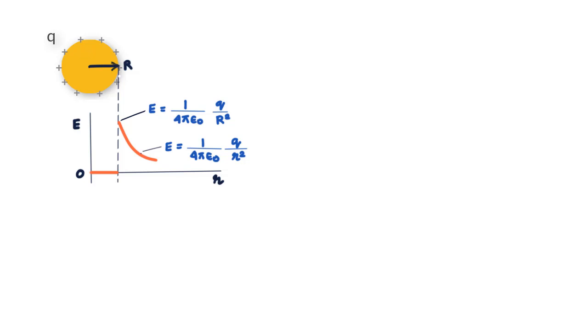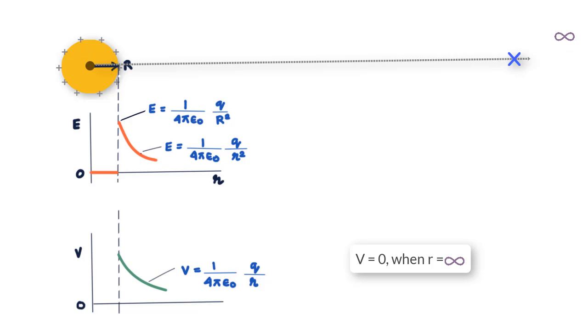So when measuring potential outside the sphere, we can assume the sphere to be like a point charge with charge Q and we can directly use the formula for potential due to charge Q that is 1 upon 4 pi epsilon Q by R and we see that the potential will be zero when R is at infinity and increase as R reduces and at R equal to R it equals 1 by 4 pi epsilon Q by capital R.